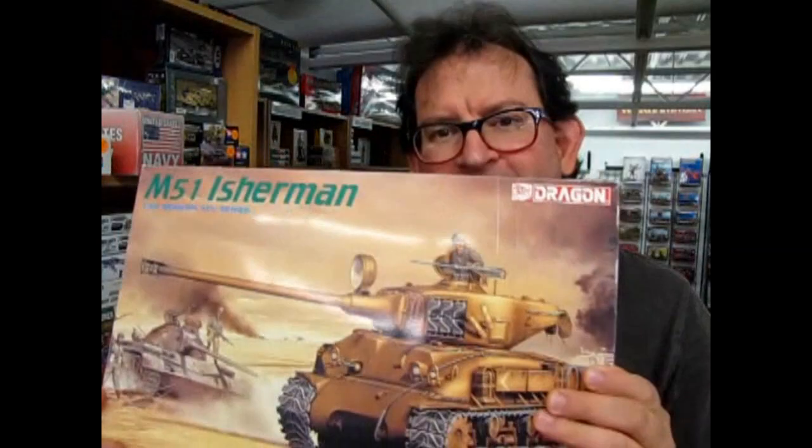AMT Ertl's Pro Street 1970 Dodge Coronet Super B coming up next. What's in the box? Hello once again Mopar fans and Pro Street drag racing fans out there. Welcome back to another unboxing video as we take a look at AMT Ertl's Pro Street 1970 Dodge Coronet Super B.